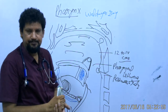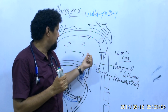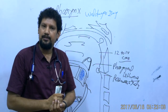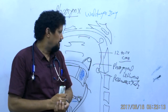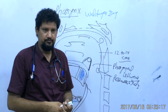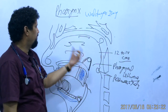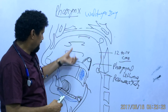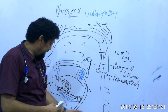Collectively, the lingual tonsils, the palatine tonsils, the nasopharyngeal tonsils, and the tubal tonsils form Waldeyer's ring of mucosa-associated lymphoid tissue, known as MALT. Externally, the pharynx is related to the nasal cavity, the oral cavity, and the larynx.